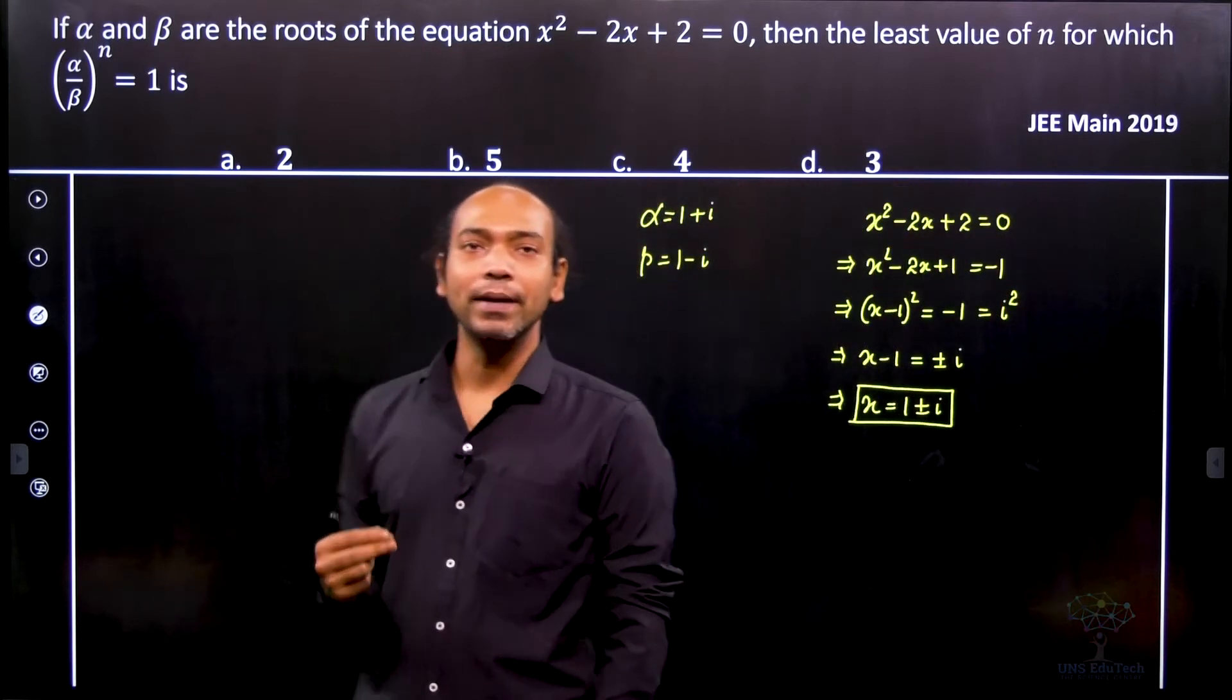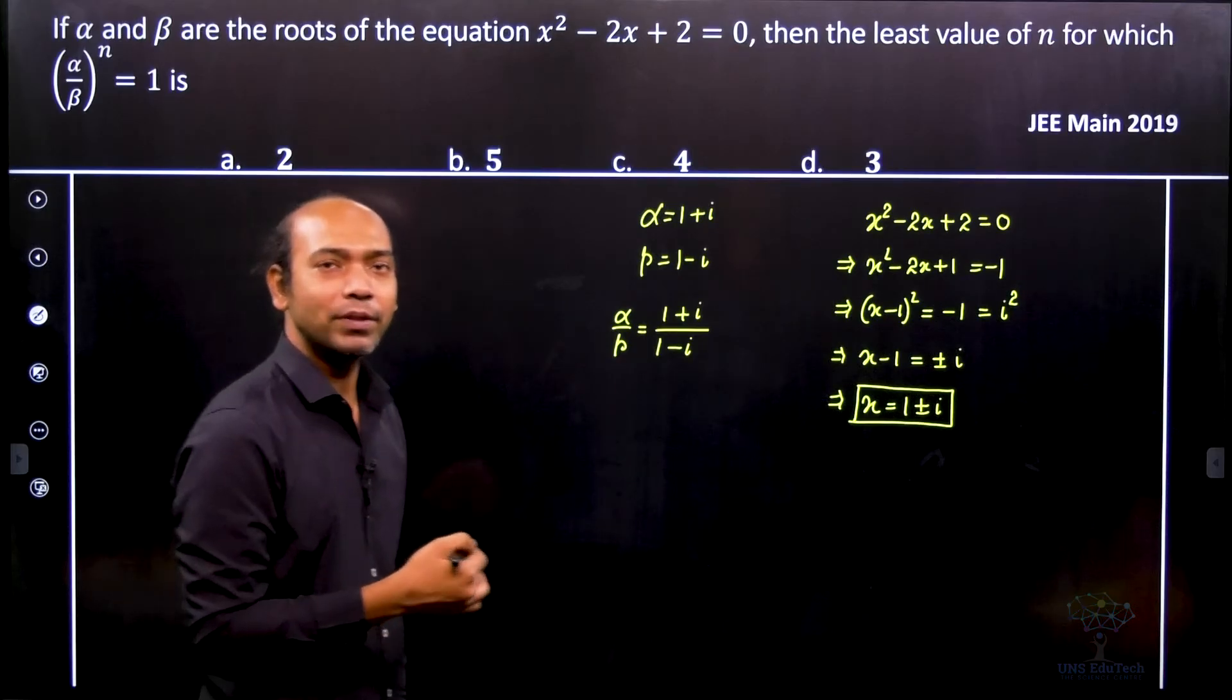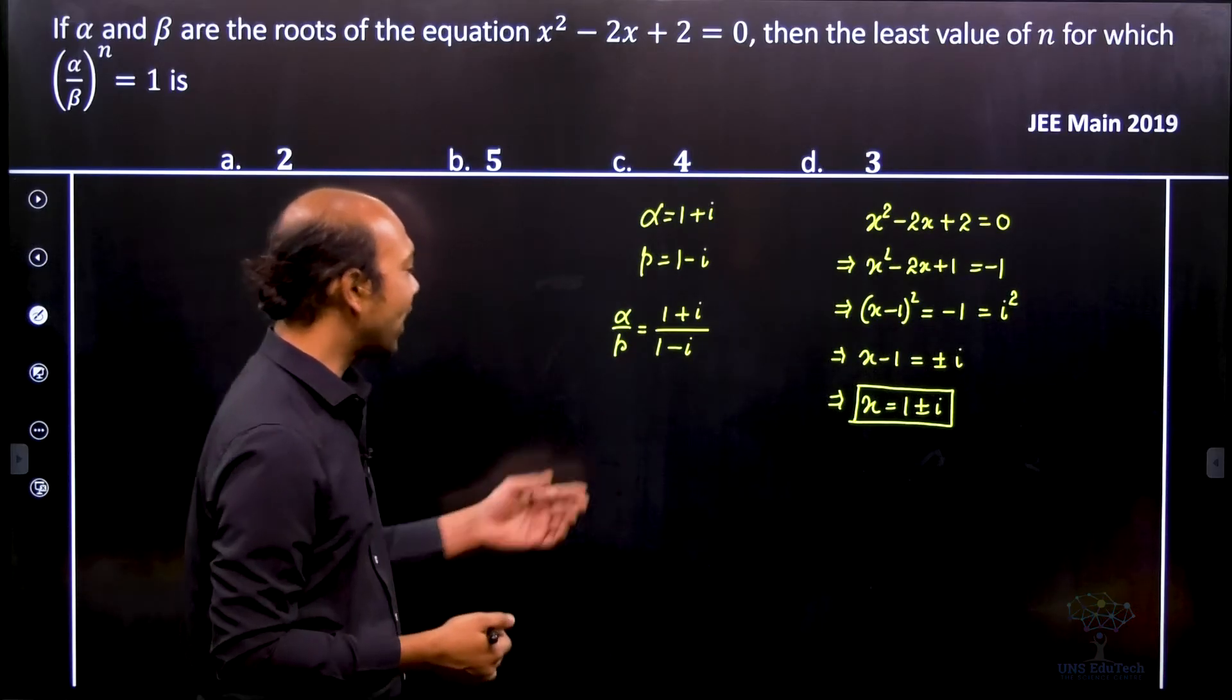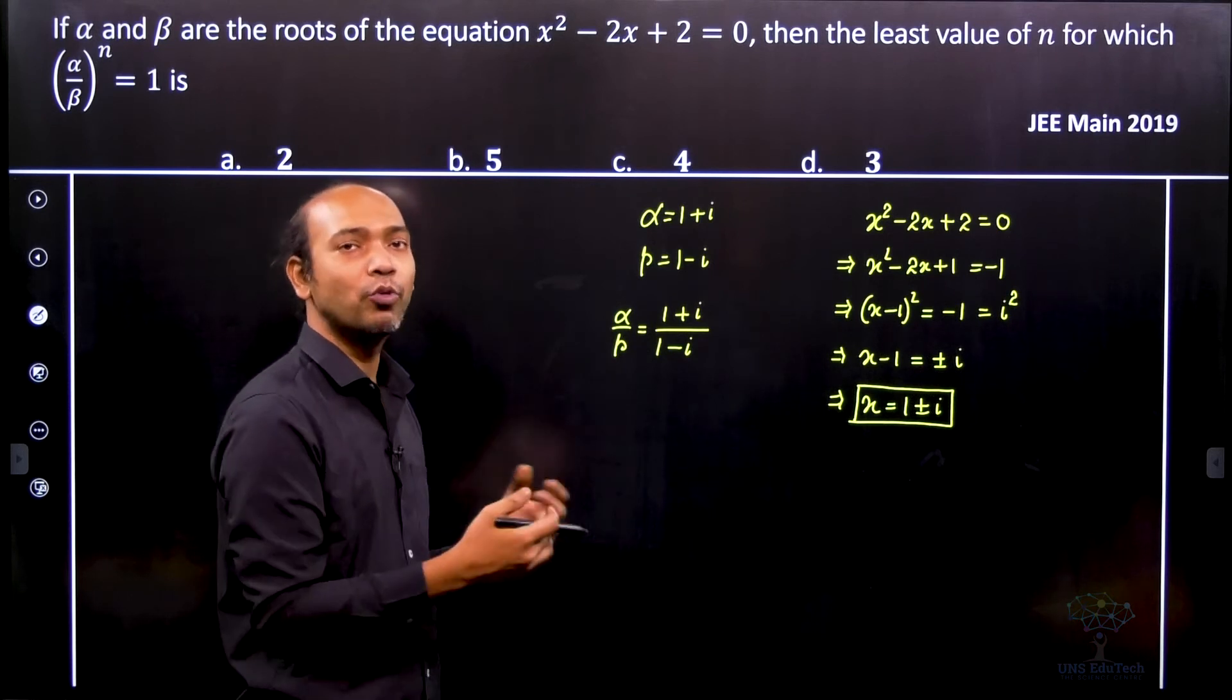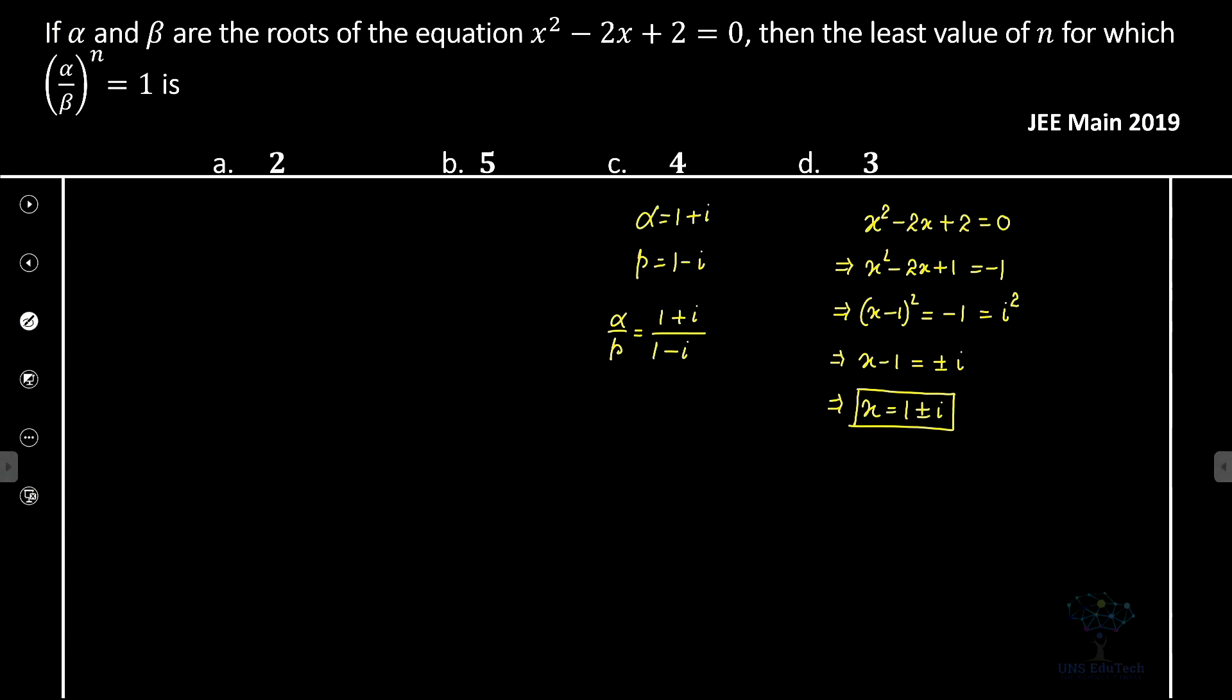α/β is (1 + i)/(1 - i). To simplify this into x + iy form, we multiply by the conjugate of the denominator. Therefore, we get (1 + i)²/[(1 - i)(1 + i)].